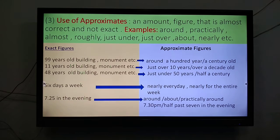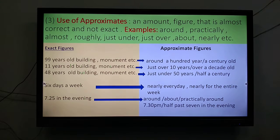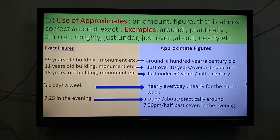The other thing that we learnt was using approximates — an amount or figure that is almost correct but not exact. A word which tells us that something is approximate. We use words like around, practically, almost, roughly, just under, just over, about, nearly, etc.